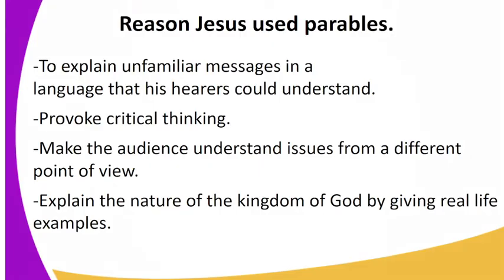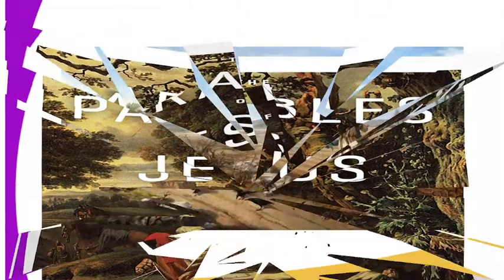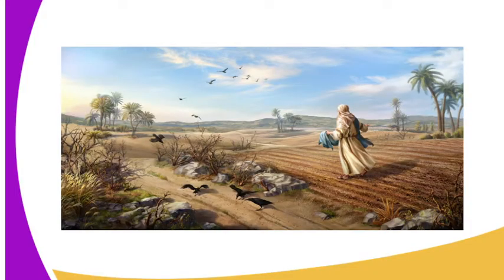Looking at the diagram on screen, you can see an example of a parable — this is the Parable of the Good Samaritan, where Jesus wanted to teach his hearers about who is your true neighbor. Another example shown is the Parable of the Sower, whereby Jesus wanted to show how people receive the word of God from different perspectives.